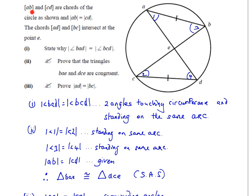In this question, line segments AB and CD are chords of a circle. The length AB is equal to the length CD. The chords AD and BC intersect at point E. As usual, we put all this information onto the diagram — AB equals CD is already marked.